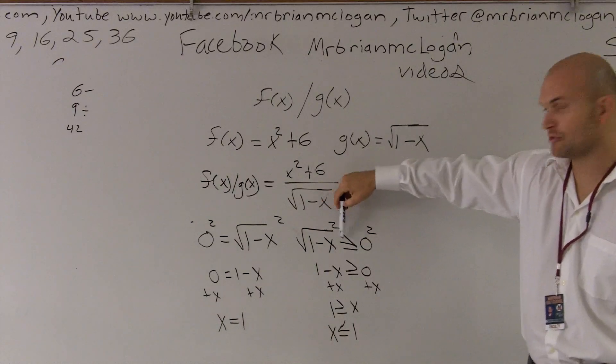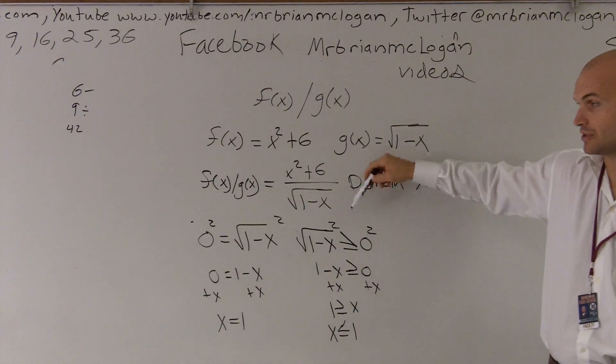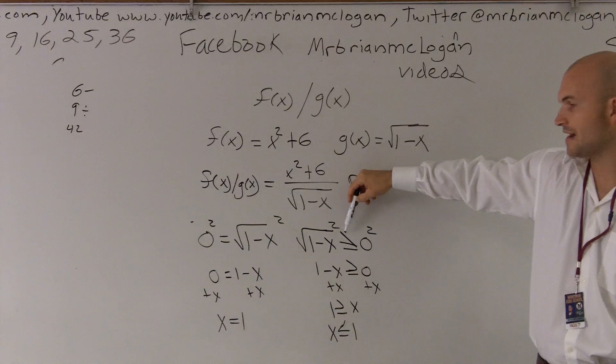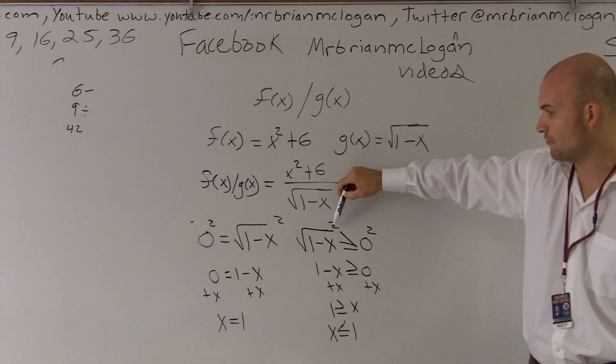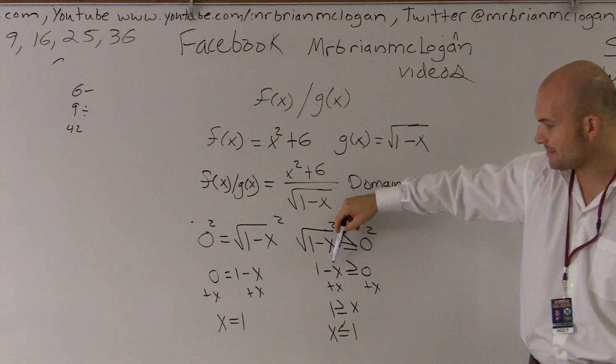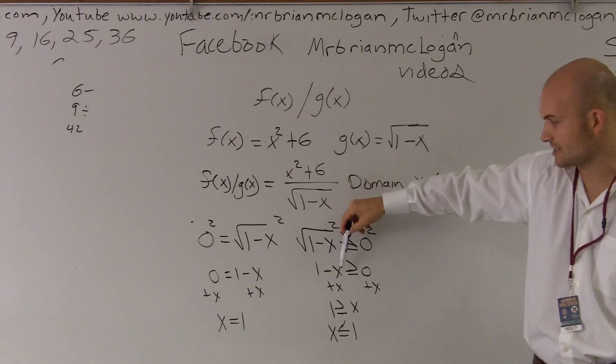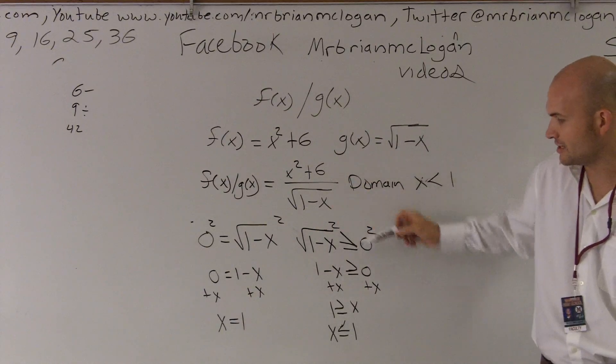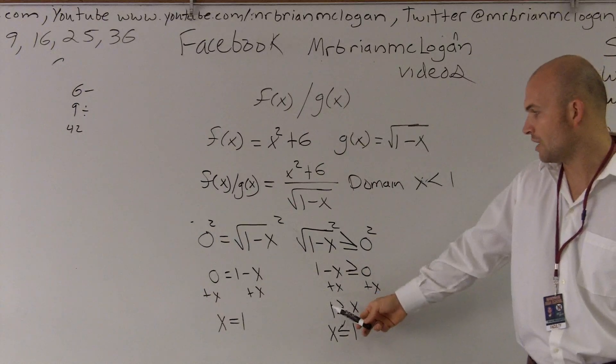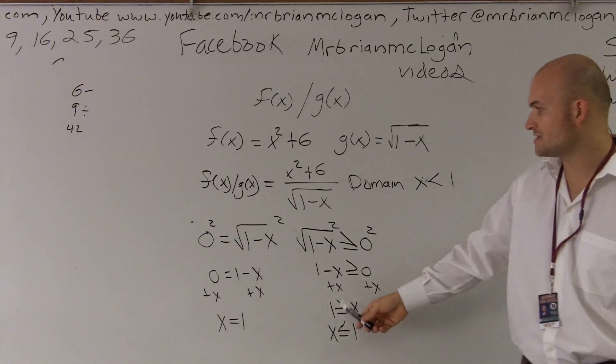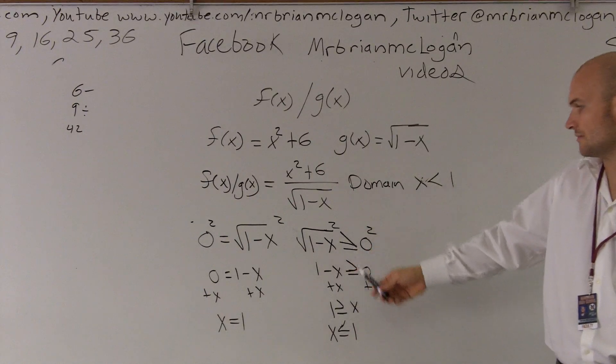It says all this has to be greater than 0, right? So let's solve for what values have to be greater than or equal to 0. So when I solve for it, that's squared, right? And then what happens is I just solve for x. So I move the x over here. So it's actually all values that are less than 1. The thing about this is that all values that are less than 1 work.